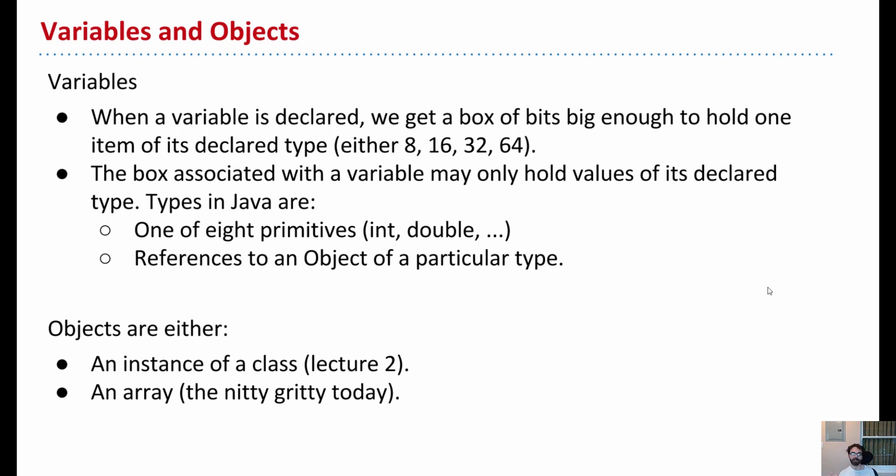The ninth type in Java is a reference to an object. That's something where we're not actually putting the bits for the thing of interest in the box. We're just referring to it. We just have an address of an object.